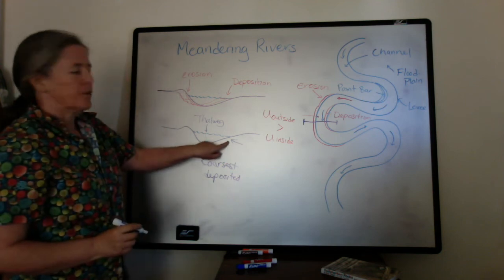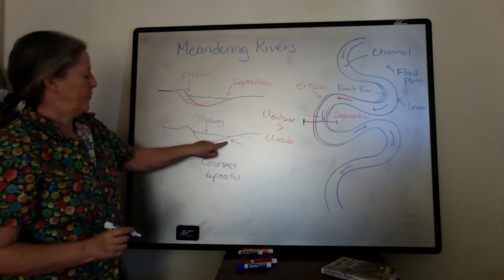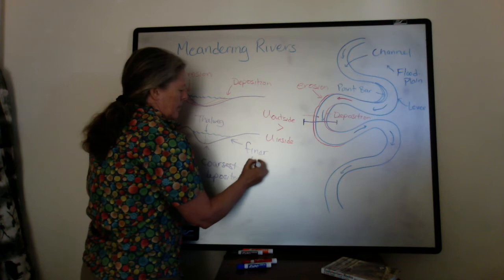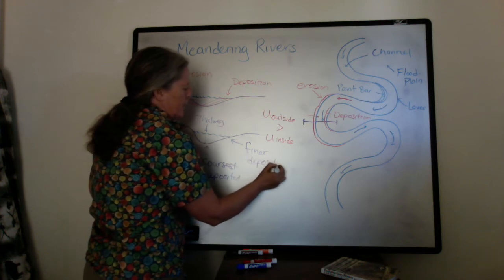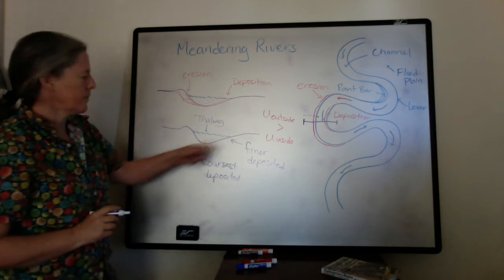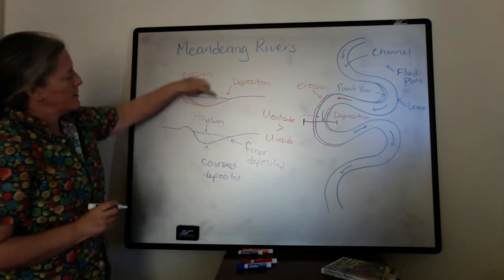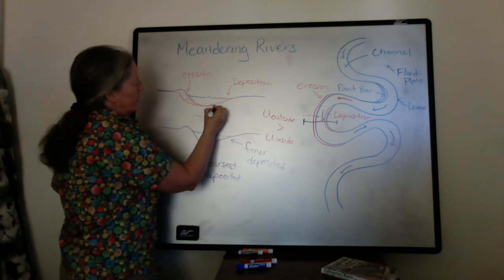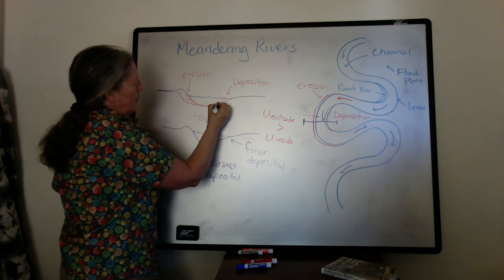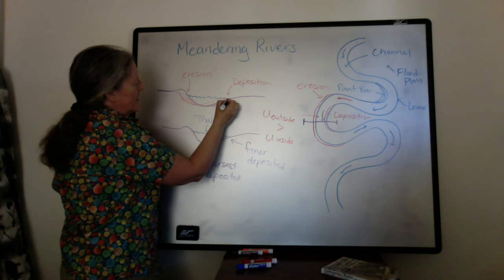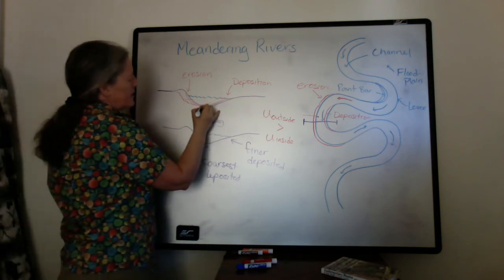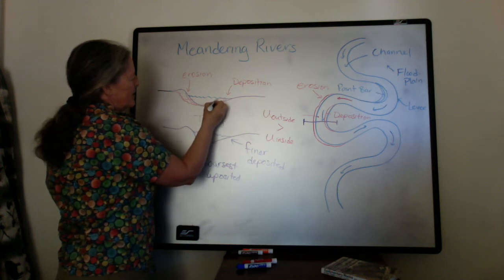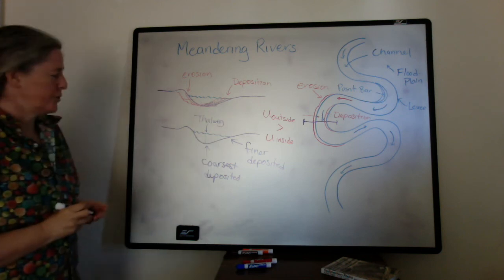Higher up on the point bar is where you can only accumulate finer sediment — the coarsest grains don't get transported up there, but finer sediments are deposited in that zone. So as the point bar migrates, what you see are coarser grains overlaid by finer grains going upward, with each successive layer showing coarser grains at the base and finer grains above.